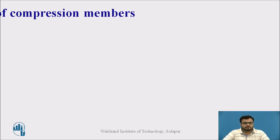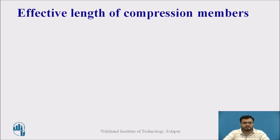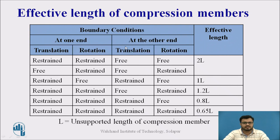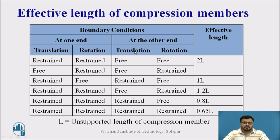How to select the effective length of a compression member? This is given in IS 800-2007, Table 11. For different boundary conditions we have different values of effective length. For example, with one end having translational restraint and rotational restraint, and the other end having translational and rotational freedom — representing a one-end-fixed, other-end-free column — the effective length equals 2L.